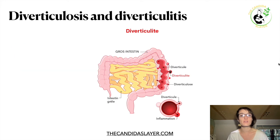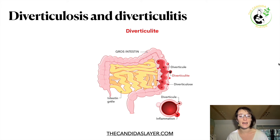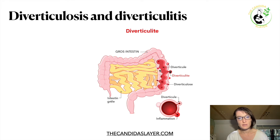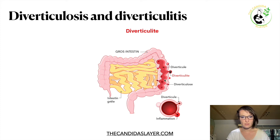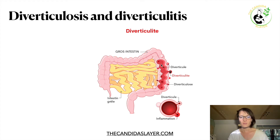So, diverticulosis and diverticulitis — we will talk about the difference, what they are, the symptoms, the cause of these diseases, and how to heal naturally. Diverticulosis is when you have these little pouches forming in your colon. You can have diverticulosis anywhere in your digestive tract, but usually you will get problems mostly in your colon, especially in the last part — the descending left colon and the sigmoid colon. More than 65% of people who have diverticulosis or diverticulitis have issues in this area.